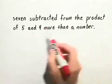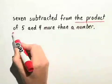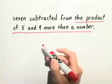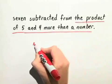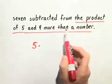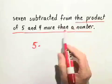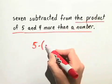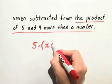The product of 5 and 4 more than a number can be written like this: 5 times 4 more than a number. 4 more than a number can be written as either 4 plus x or x plus 4.